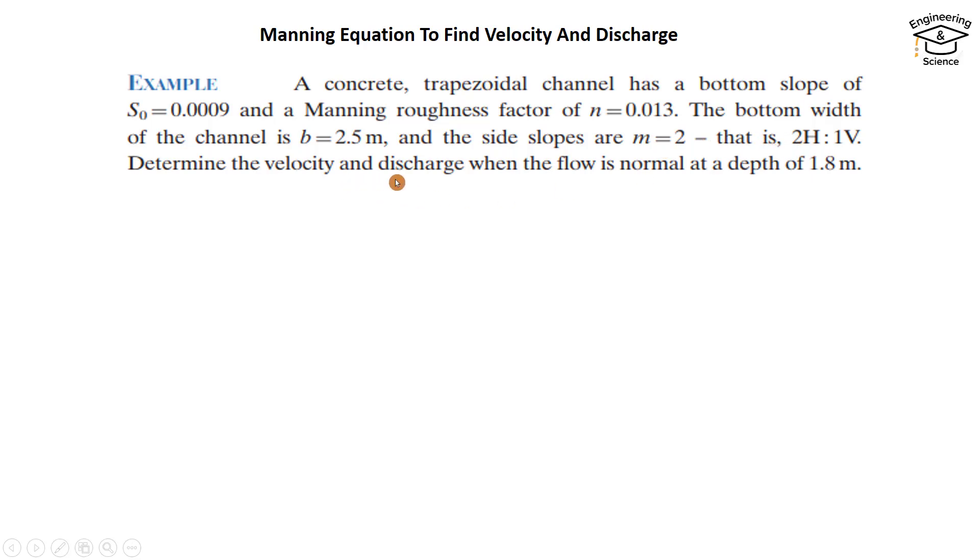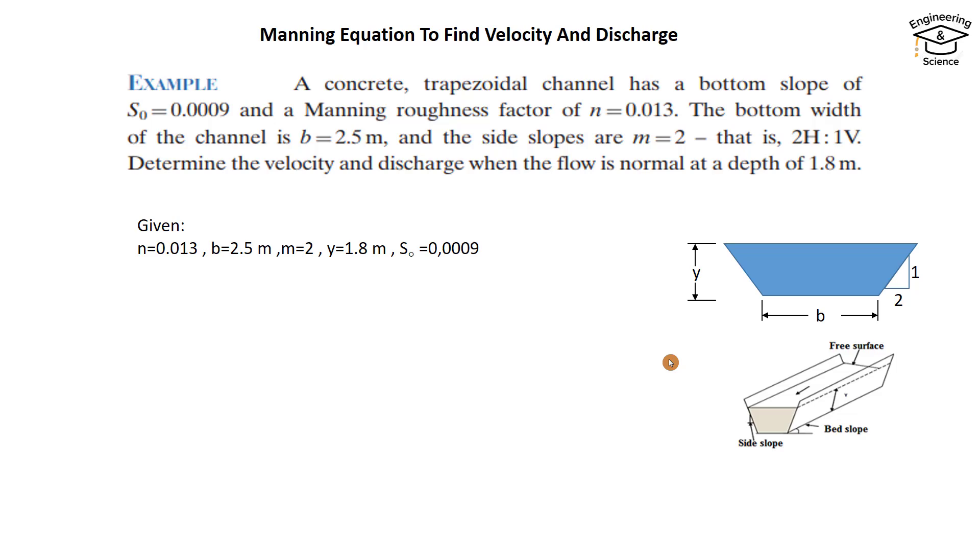We have to find velocity and discharge when the flow is normal at a depth of 1.8 meters. That's our channel: the depth, the bottom width, and the side slope—two horizontal, one vertical. The bed slope S₀ is given. That's the Manning roughness factor, bottom width, side slope, depth, and bed slope.